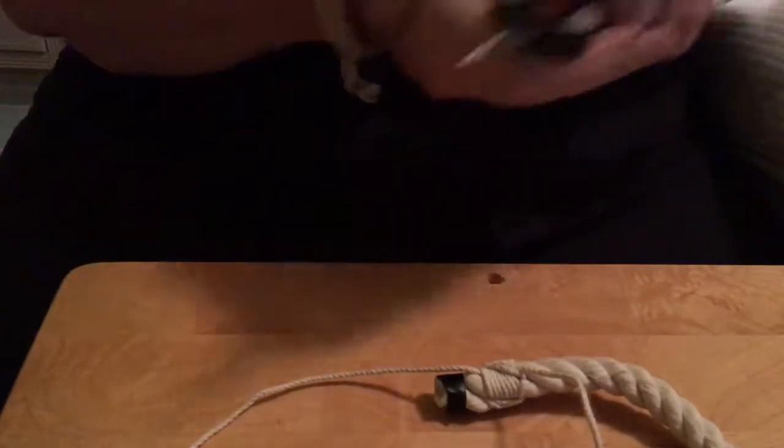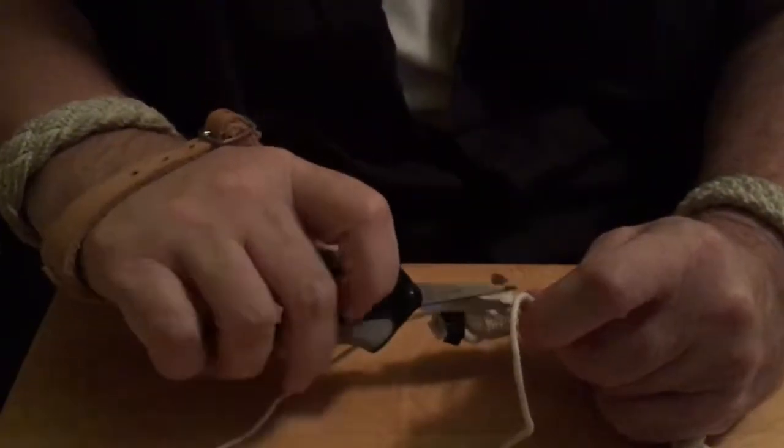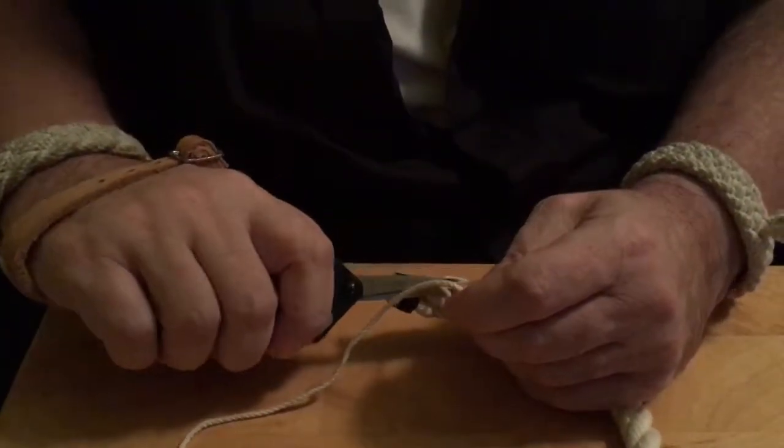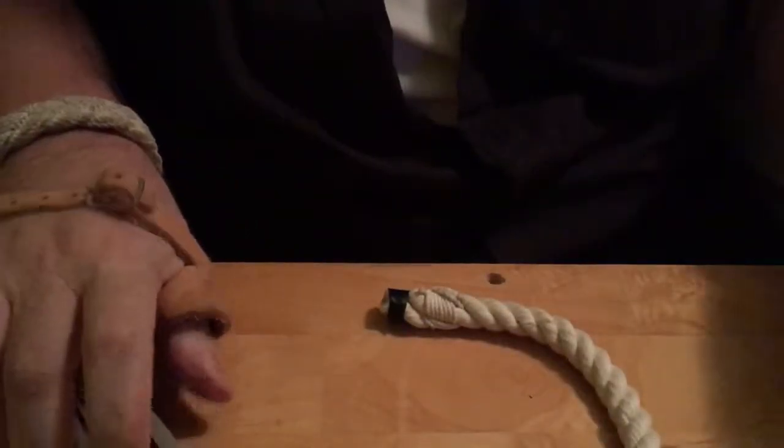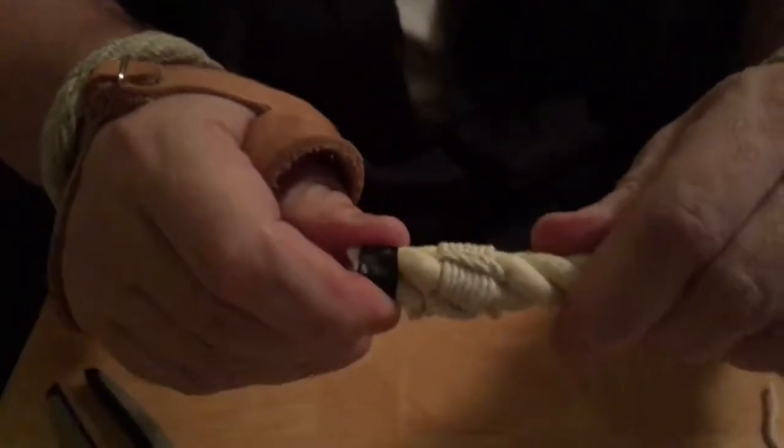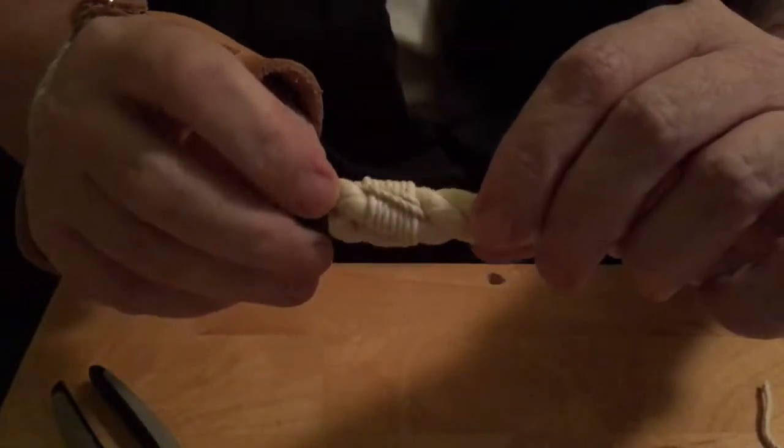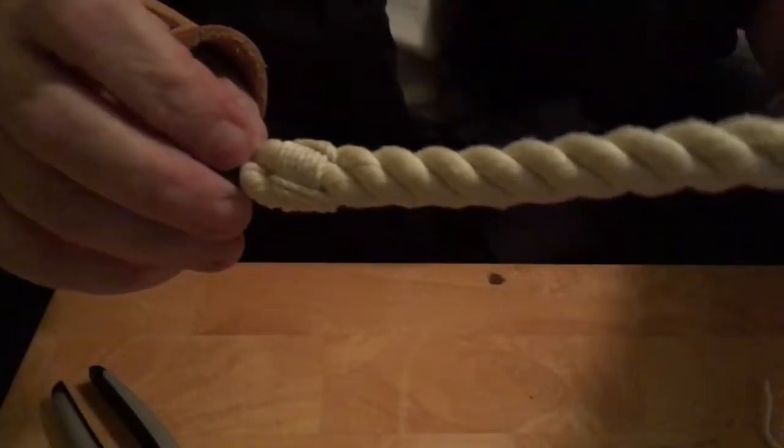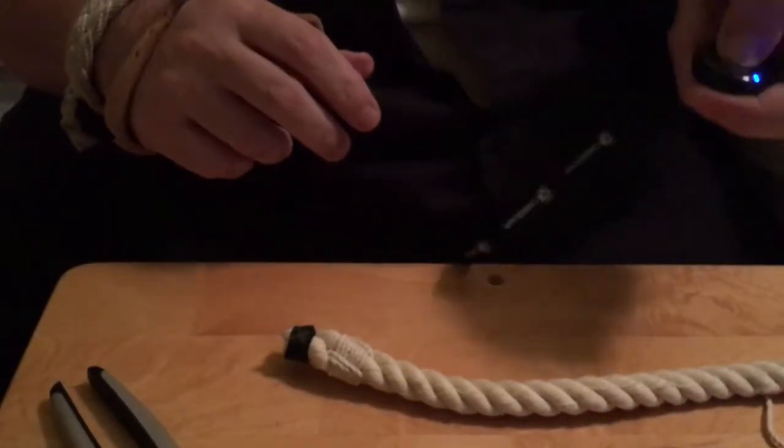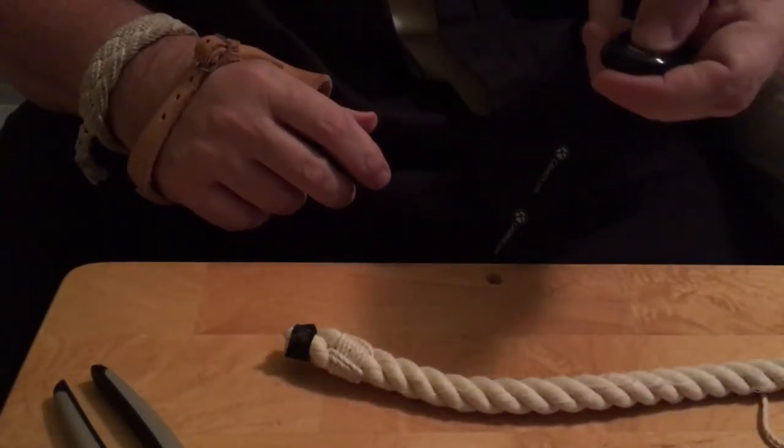Just snip everything off. Sailmaker's whipping doubled, and that'll never come out.